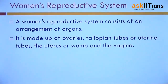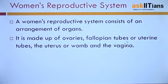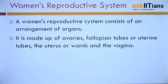A woman's reproductive system consists of an arrangement of organs. It consists of ovaries, fallopian tubes — also known as uterine tubes — uterus or also known as womb, and the vagina. Now we have to see the complete process of menstrual flow — how the complete cycle of menstruation takes place.